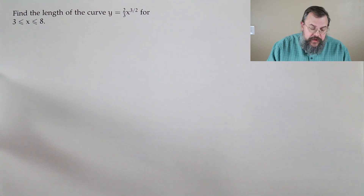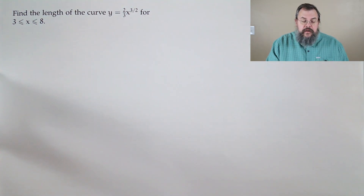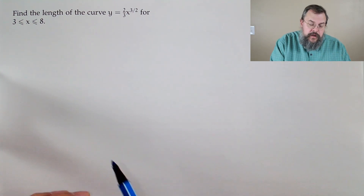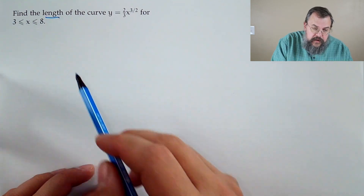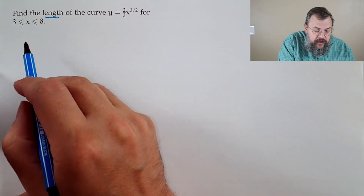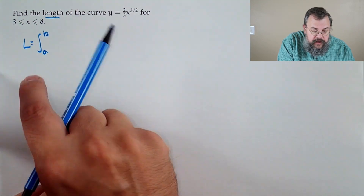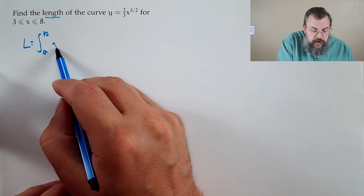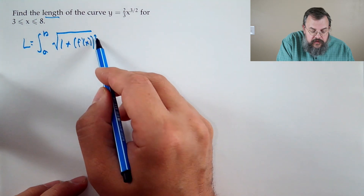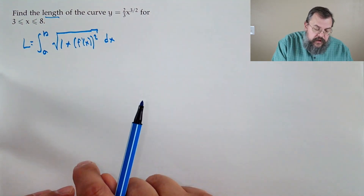Our first problem: find the length of the curve y equals two-thirds x to the three-halves, for x going from three to eight. We know it's a length problem because the clue was the word 'length.' So we think about the length formula: the length is the integral from a to b of the square root of one plus the derivative squared dx. It's a good formula to memorize.